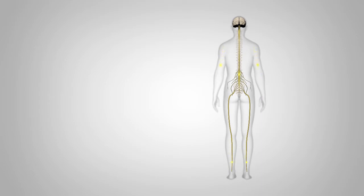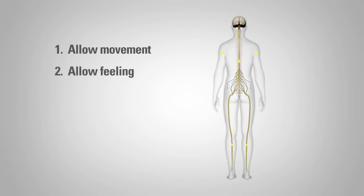Three important functions of the spinal cord are: one, send motor information from the brain to the body allowing it to move; two, send sensory information from the body to the brain to allow feeling; and three, coordinate reflexes.